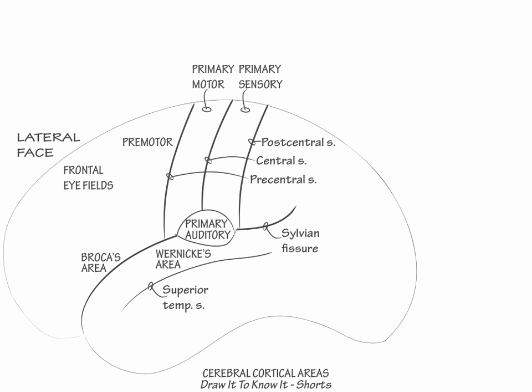Now along the superior parietal lobe, label the WHERE visual pathway, and along the inferior temporal lobe, label the WHAT visual pathway. Higher visual cortical recognition is divided into two streams, dorsal and ventral. The dorsal WHERE pathway provides spatial localization processing, whereas the ventral WHAT pathway provides object recognition processing. This concludes Part 1 of our diagram.